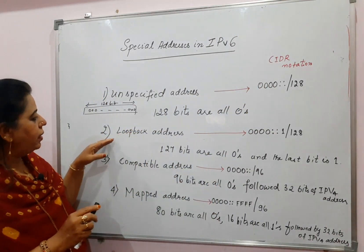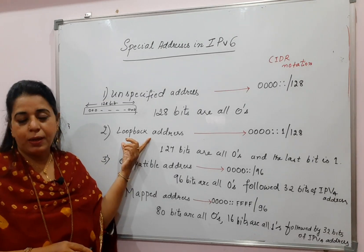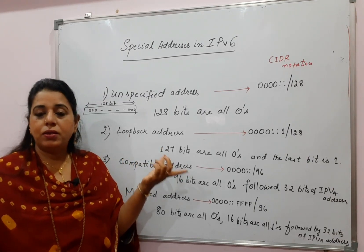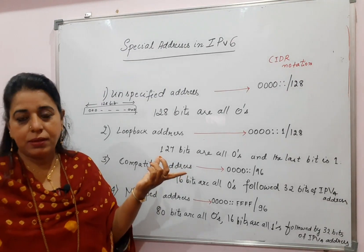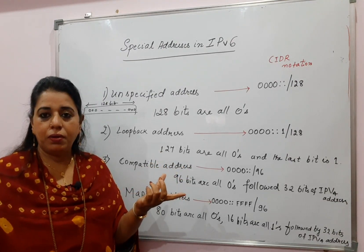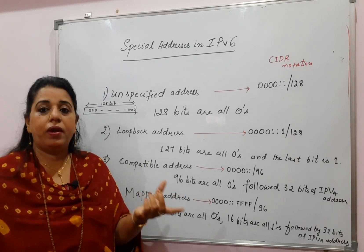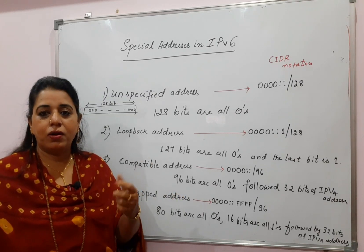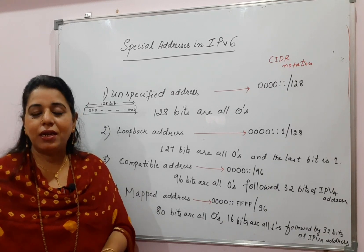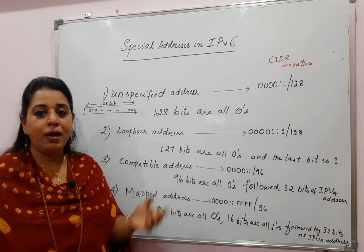The second special address available is the loopback address. The loopback address functionality remains the same — it is used basically for testing purposes. Any point of time if you want to test your own machine, like whether the internet connection is there or whether your network interface card is working, you send a message to yourself. That means the destination address is the loopback address, which comes back to your own machine.